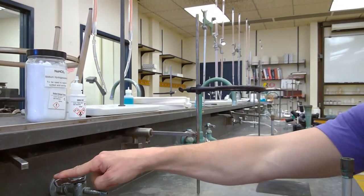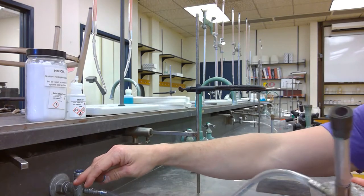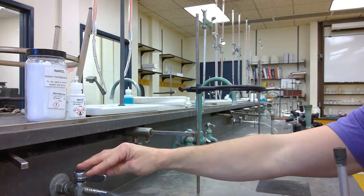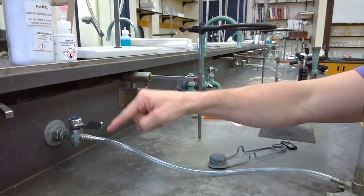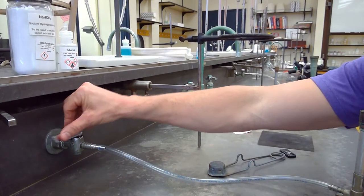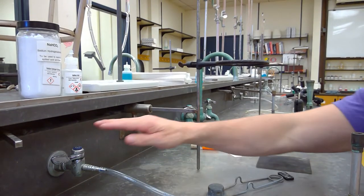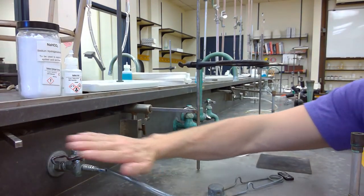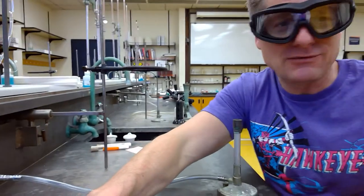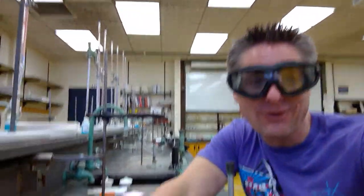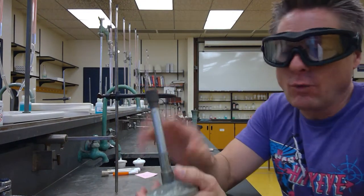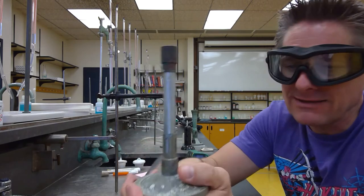We control the gas with this valve. When it's parallel with the hose, that's maximum gas. Turn it until it's perpendicular and the gas is off. When you're done with the lab, turn it off. If there's a fire, turn it off. If you're leaving, make sure this is off. Never have your Bunsen burner running if you're not here to watch it. In any emergency, turn that fuel off to extinguish the flame.